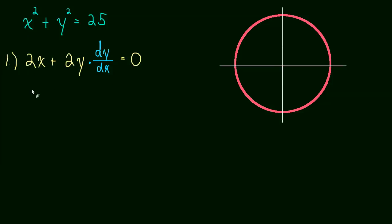Okay, now we're just going to do some simple algebra. Subtract the 2x from both sides. We get 2y times dy dx is equal to negative 2x. We subtracted it.